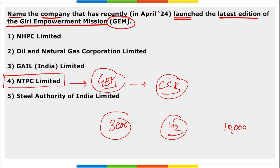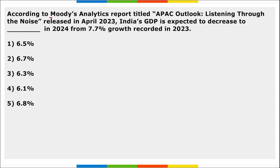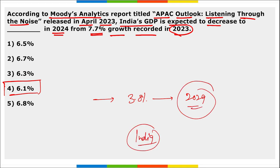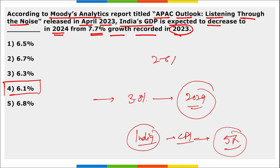According to Moody's Analytics report 'APAC Outlook: Listening Through the Noise' released in April, India's GDP is expected to decrease to 6.1 percent in 2024 from the 7.7 percent growth recorded in 2023. The report suggested the Asia-Pacific region will show a growth of 3.8 percent in 2024. It is also stated that in India the CPI inflation data will be close to 5 percent, while RBI's target is 2 to 6 percent.